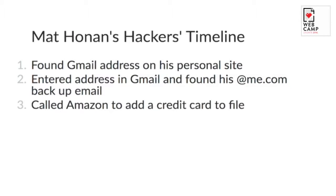They started by finding his email address on his website — a perfectly normal thing to have on your personal site. It was a Gmail address, so they went to Gmail and found that he had a me.com email backup with Apple. With this information, they phoned up Amazon and asked to add a credit card to Matt Honan's Amazon account. They used the support team and a bit of social engineering to bypass as many passwords as possible. Eventually, to add the credit card, they had to provide two bits of information: an email address and a billing address. Getting the billing address was probably the most technical part — they likely used a Whois lookup on his domain name.